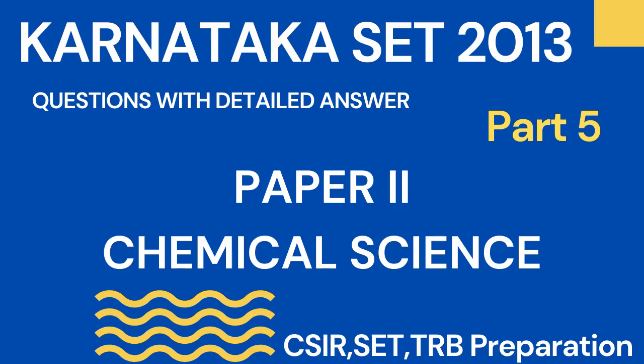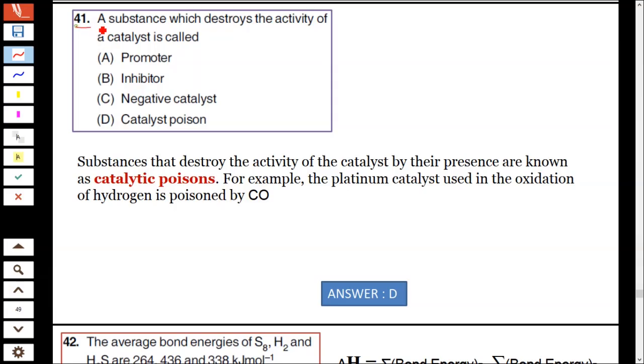Welcome to the chemistry YouTube channel, Karnataka 2013 part 5. Question number 41: A substance which destroys the activity of a catalyst is called? Substances that destroy the activity of a catalyst by their presence are known as catalytic poisons.